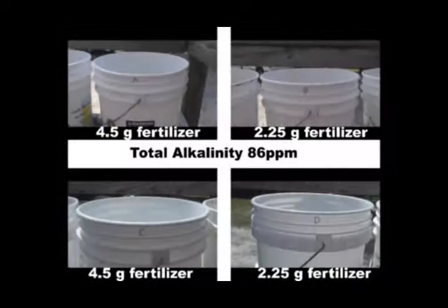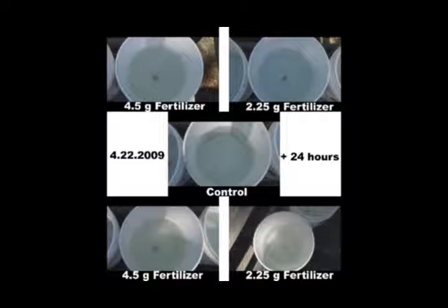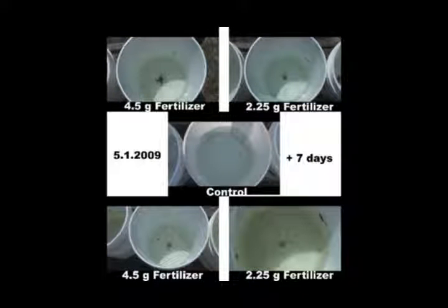These photo composites are of our two ponds treated with 2.25 grams of crushed fertilizer compared to our two ponds treated with 4.5 grams of fertilizer. Our control pond is the one in the middle.